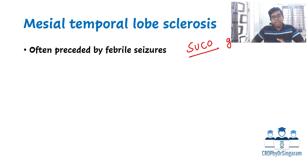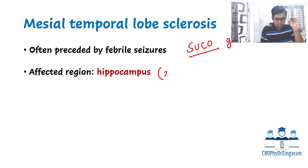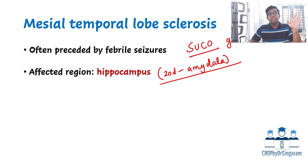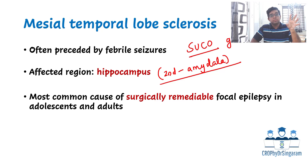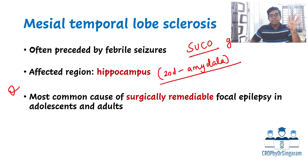Regarding the area affected, the most common area is the hippocampus, with atrophy or gliosis of the hippocampus. The second most commonly affected area is the amygdala. It is important to know these areas because mesial temporal lobe sclerosis is surgically treatable — in fact, it is the most common cause of surgically remediable epilepsy in adolescents and adults. This is the most important MCQ point for this condition.